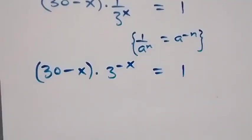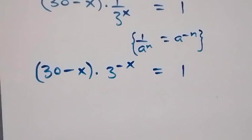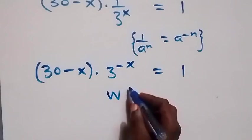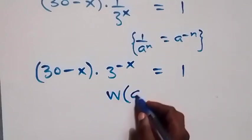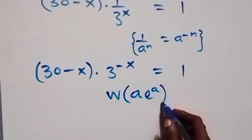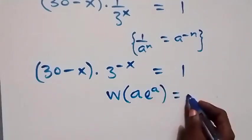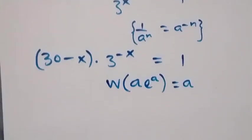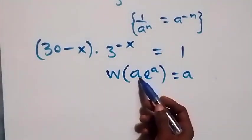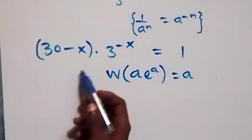From here we intend to apply the Lambert W function, which follows from W of a times e^a equals a. That is, we should have the power of the exponent and the coefficient equal.